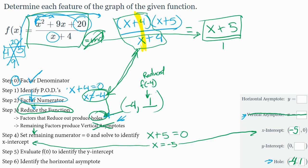And now we do step 5. To do step 5, f of 0, we're talking specifically about going to that reduced version. So f of 0 is going to look like 0 plus 5, which is 5. So my y-intercept should be 0 comma 5.